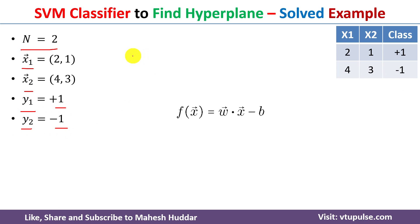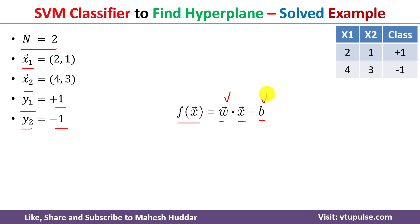The equation for the SVM classifier is given by f of x1 vector is equal to the weight vector multiplied by the input vector minus the bias. We need to calculate the weight vector as well as the bias, because we know the input but we do not know the weight vector or the bias.